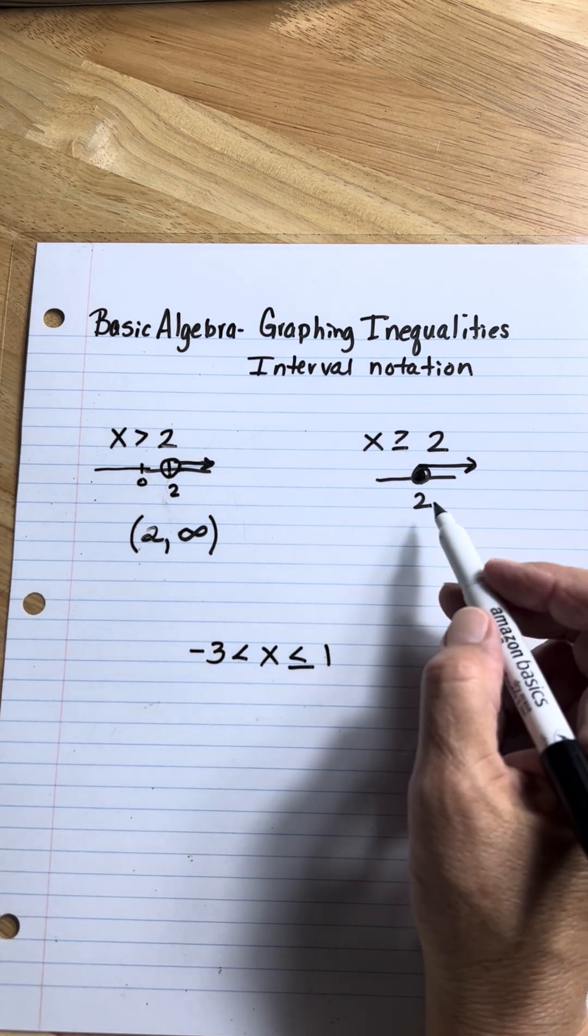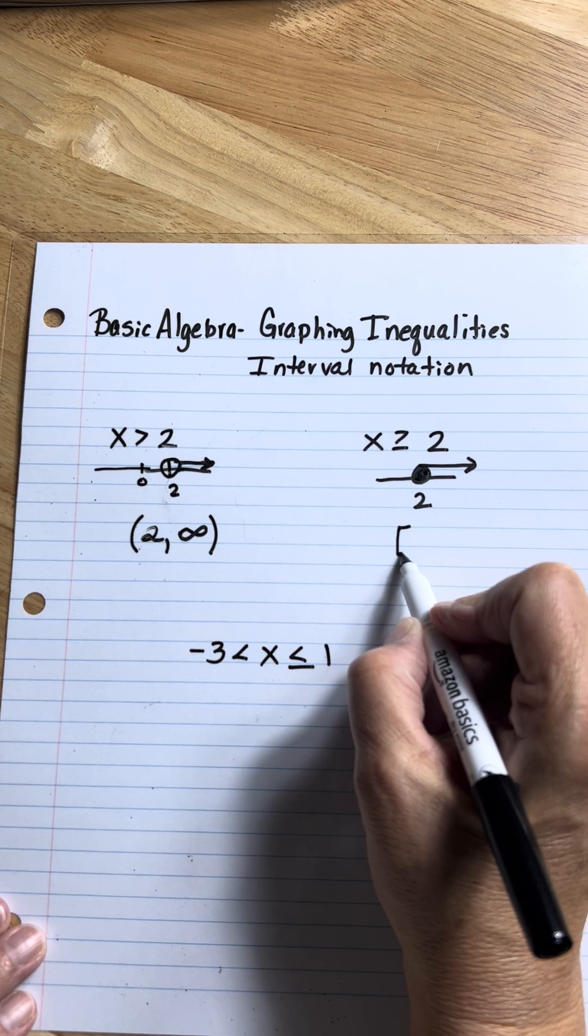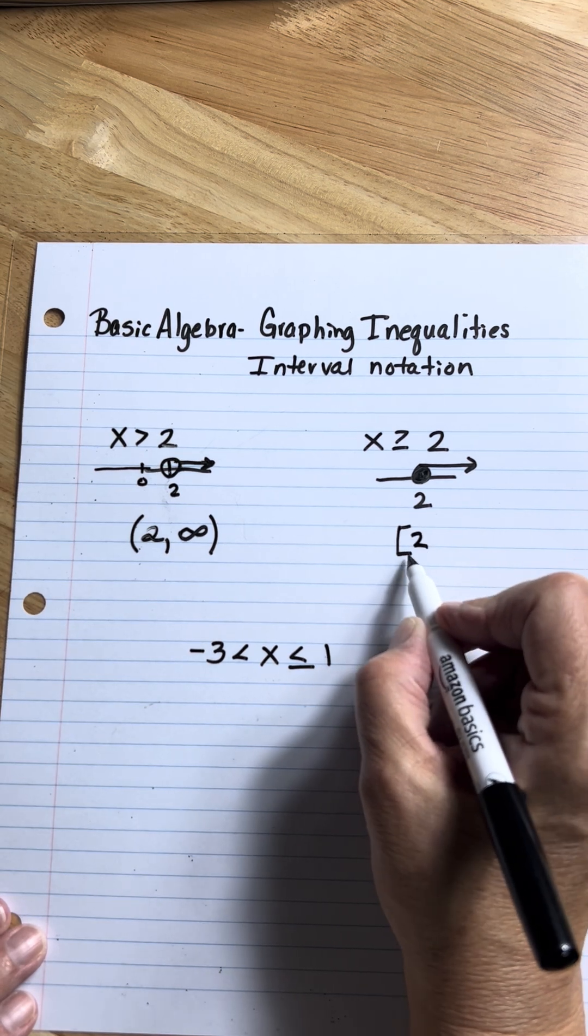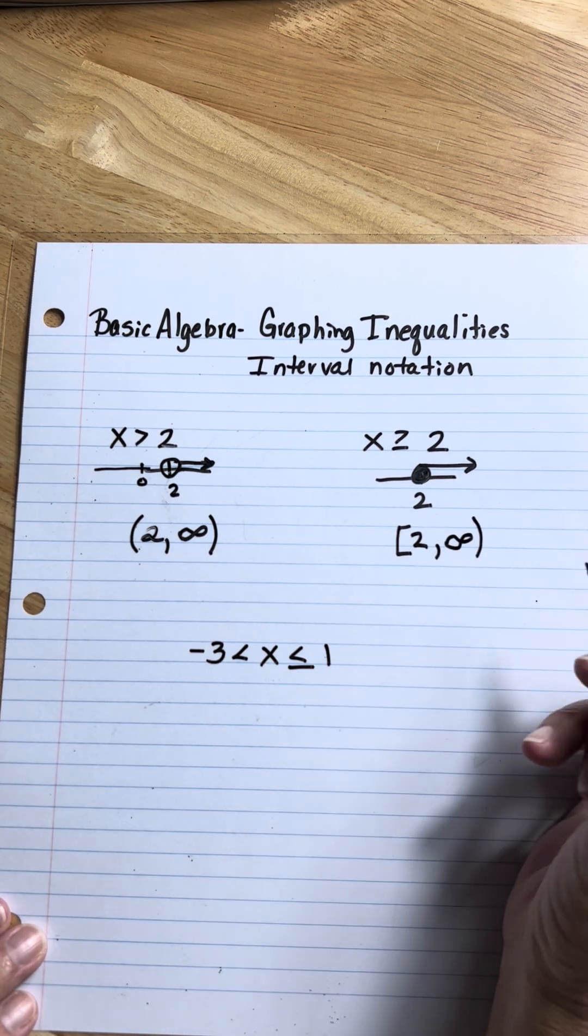Now, how about interval notation on that? Well, it still starts at two, but since it's a solid dot, it includes two. I'm going to use a bracket on this end. I'm still going to go to infinity, and that will still be a parentheses.